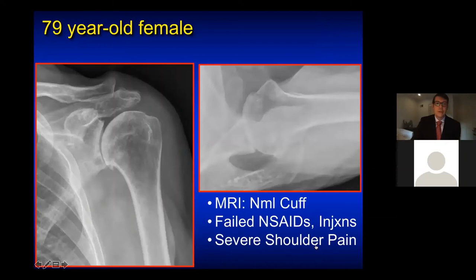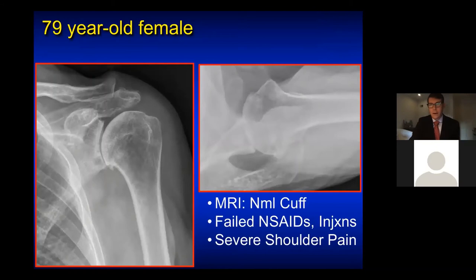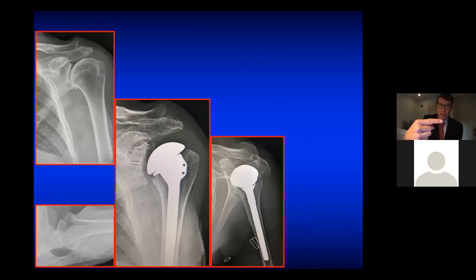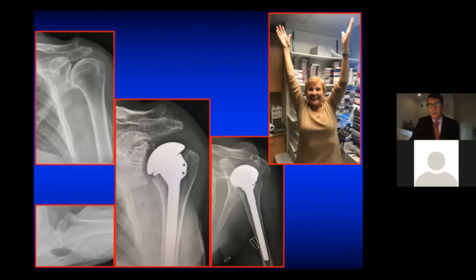Here is a straightforward case — a 79-year-old female with end-stage arthritis, joint space obliteration, subchondral sclerosis, and a small osteophyte. Her MRI shows a normal rotator cuff. She no longer has pain relief with non-steroidals or injections, so she's a perfect candidate. Looking at her pre-operative and post-operative images, she has an anatomic reconstruction where we put a stem down the canal and a plastic glenoid component that resurfaces the socket, cemented in place with pegs into the socket. Here she is at about two to three months out from surgery — a superstar with a very quick recovery, arm up over her head.